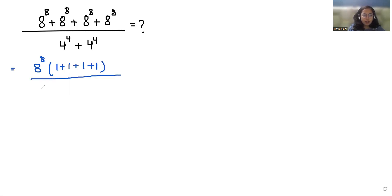Similarly from the denominator I can take 4 power 4 as common. So what is left? 1 plus 1. Now 8 power 8 times 4 by 4 power 4 times 2.